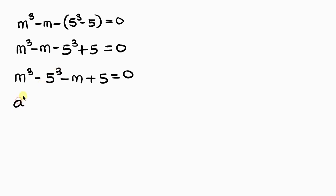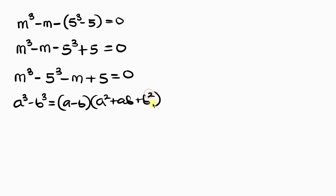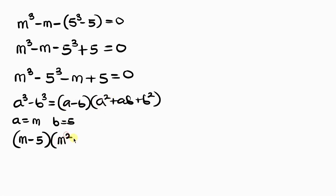The difference of two cubes says a cubed minus b cubed equals (a minus b)(a squared plus ab plus b squared). Here a is m and b is 5, so m cubed minus 5 cubed equals (m minus 5)(m squared plus 5m plus 25). Then we have minus m plus 5, which we write as minus (m minus 5), equal to zero.